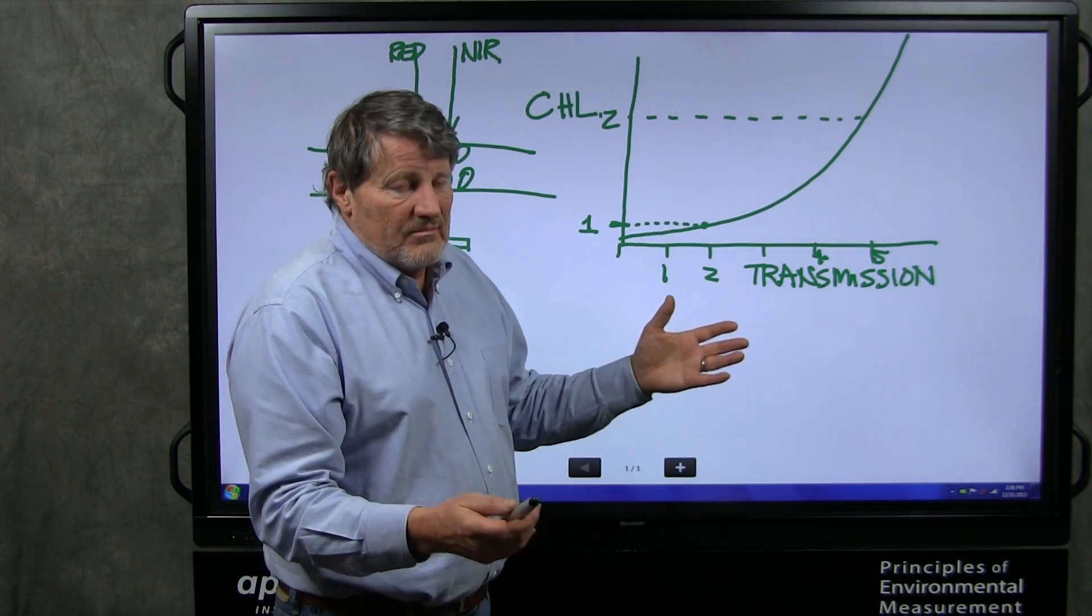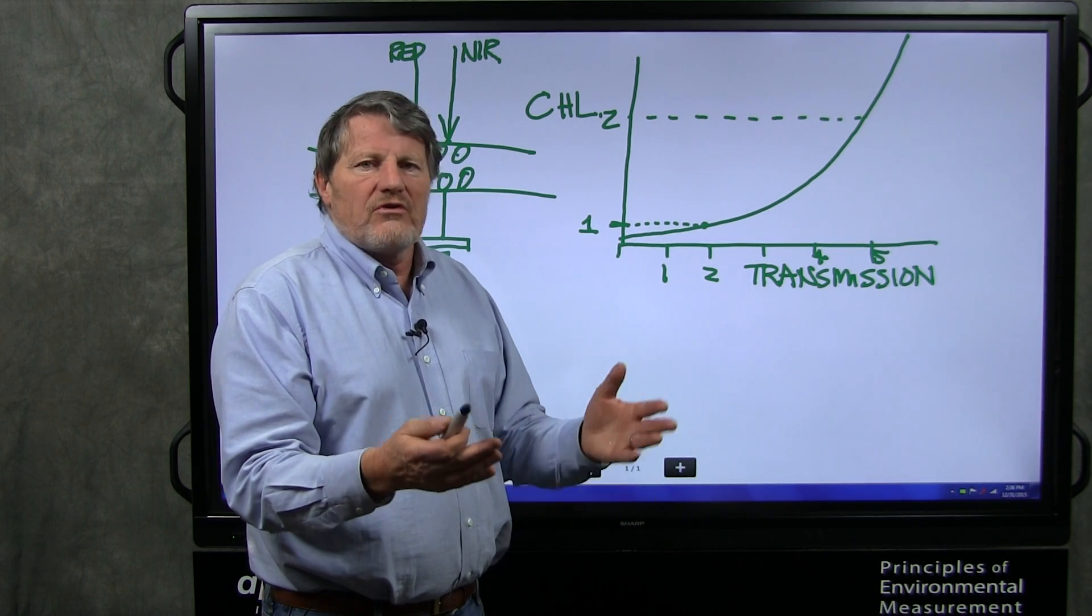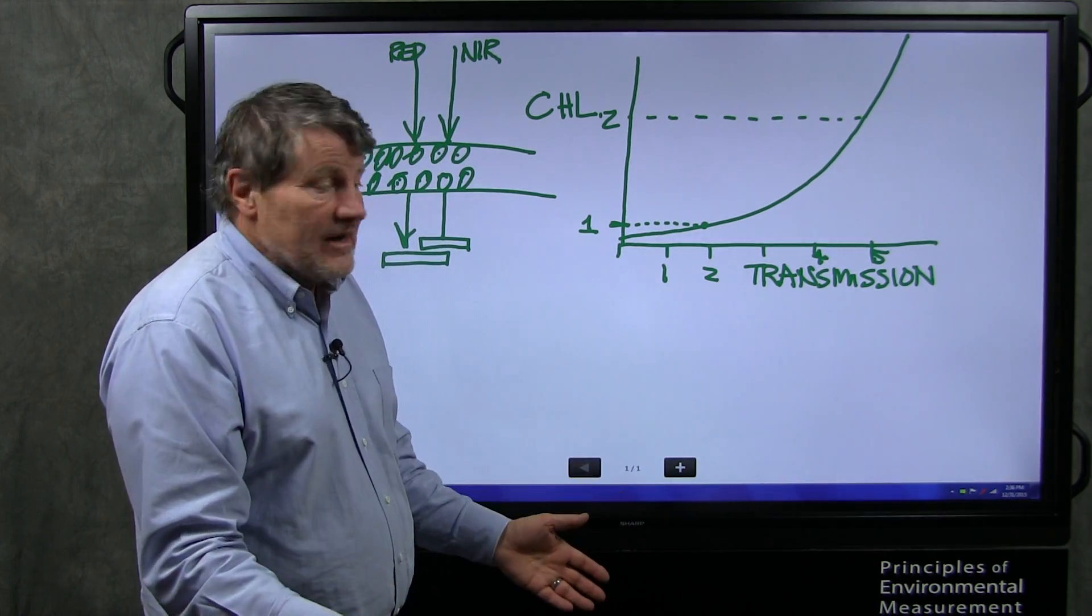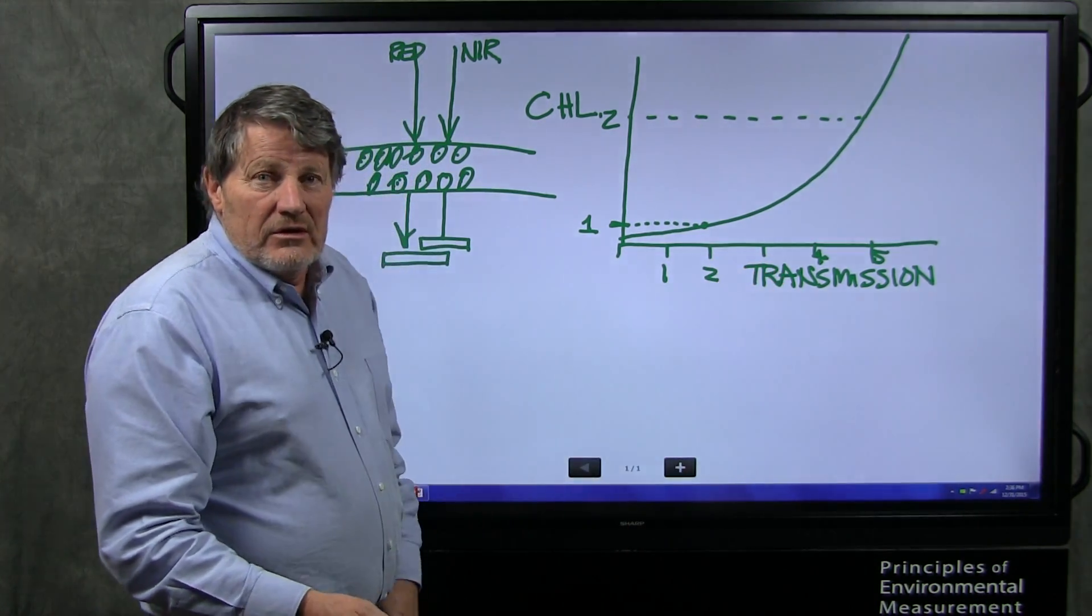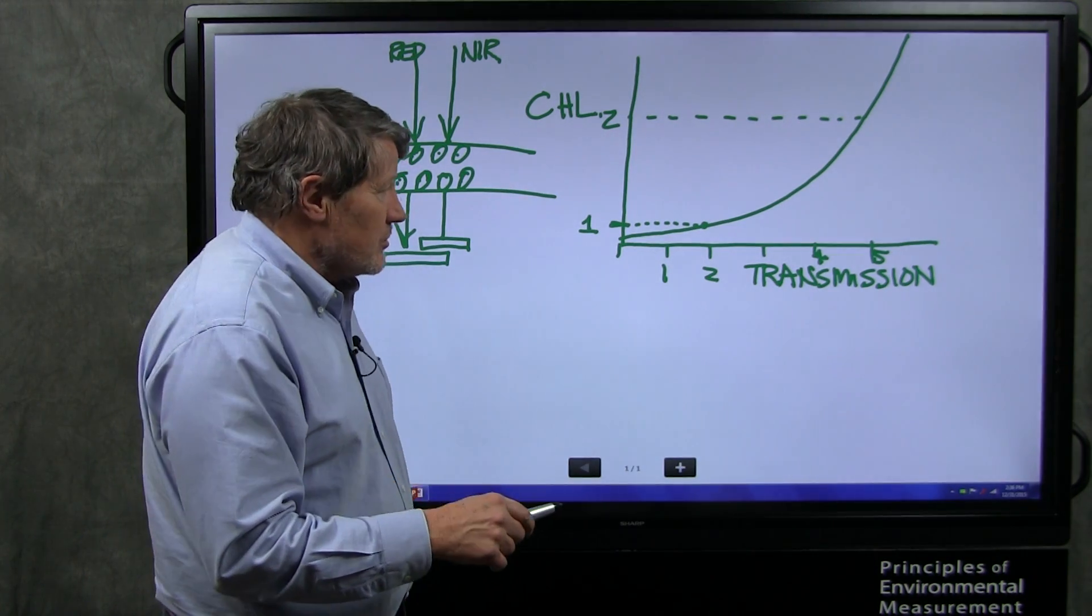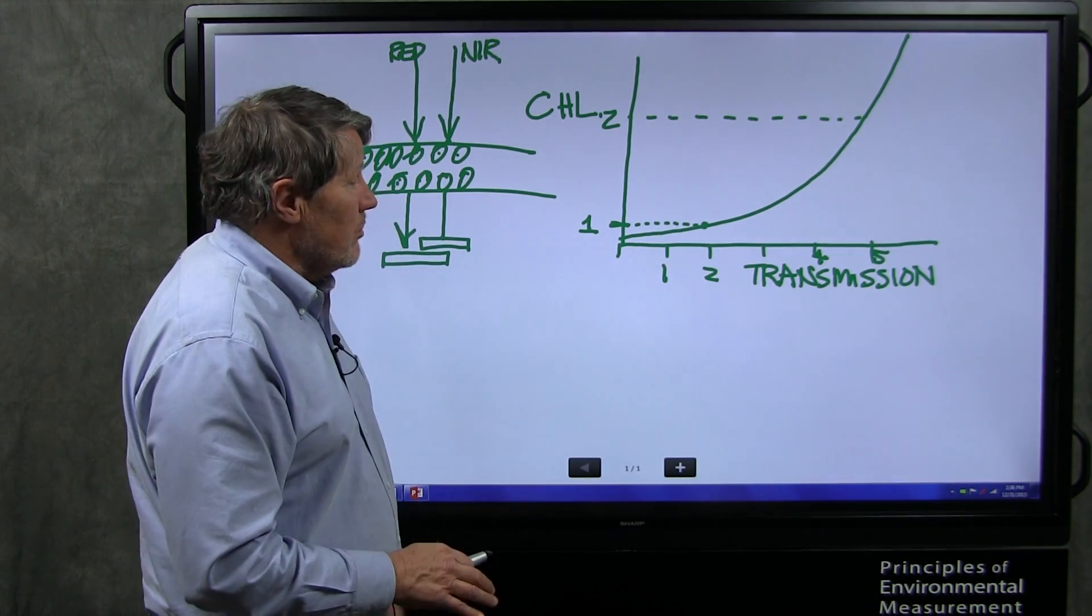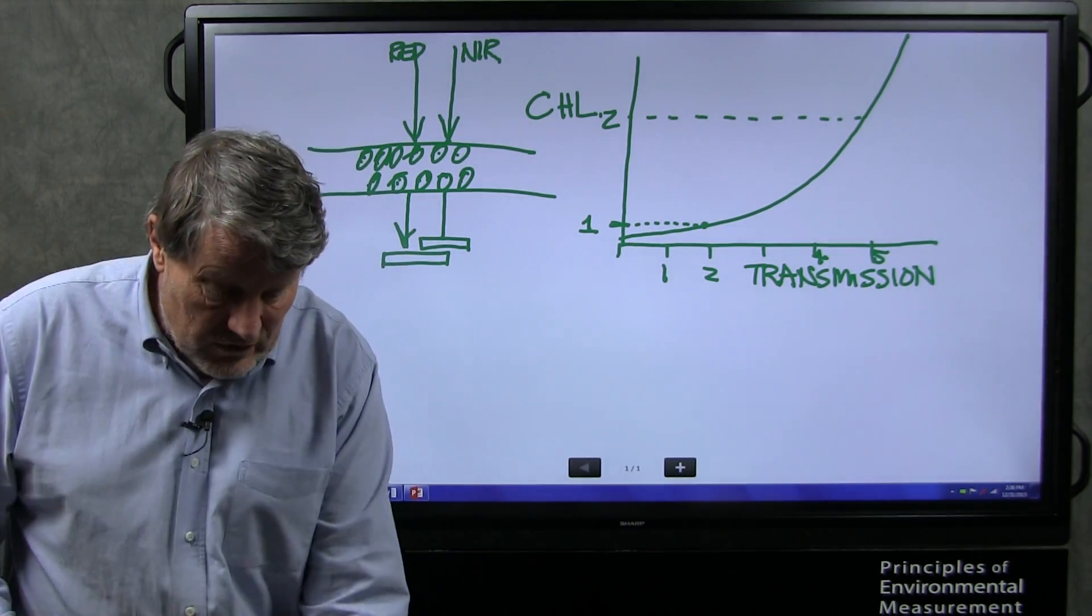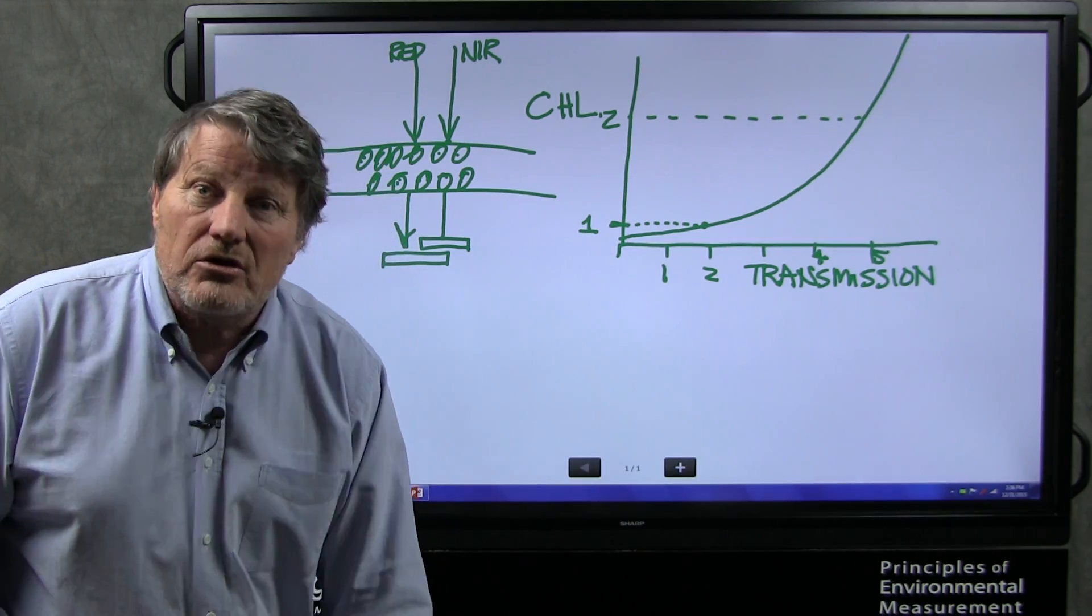This has led to lots of problems. People write papers and they say the SPAD number went from two to four, therefore my chlorophyll doubled. And that is wrong. The chlorophyll did not double. This index doubled. So the SPAD Minolta meter that reads in SPAD units only gives an index that's non-linearly related to chlorophyll. The OptiSciences meter also gives an index that's non-linearly related to chlorophyll.